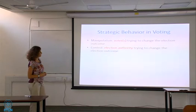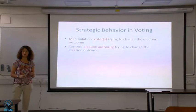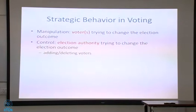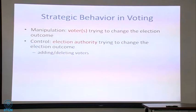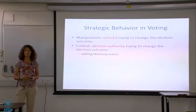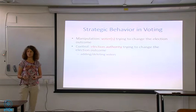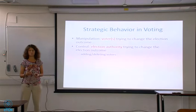Control is an election authority trying to change the election outcome — someone who is organizing the election. This covers things like adding or deleting voters. Mathematically it's easy to think about how you add or delete voters. In practical terms, it corresponds to get-out-the-vote efforts, going out and campaigning — not for or against a specific candidate, but trying to bring specific groups of people you expect to vote in a specific way to actually attend the election.